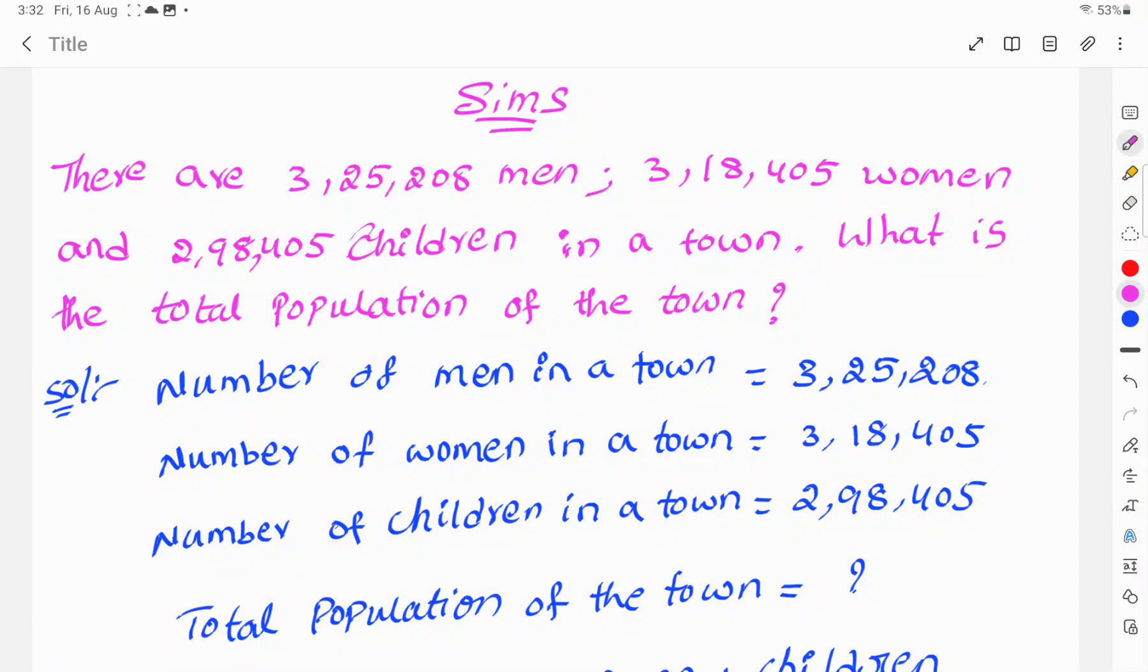Next topic: there are 3,25,208 men, 3,18,405 women, and 2,98,405 children in a town. What is the total population of the town?